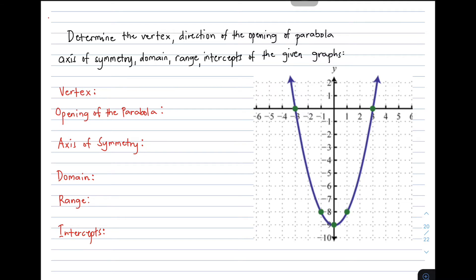Okay, first, the vertex. We know that in definition, vertex is considered as the highest point or the lowest point of any parabola. By the way, there are different parabolas — we have four. But in quadratic function, we only consider two parabolas: one opening upward and one opening downward. So the vertex here is at coordinates 0, negative 9.